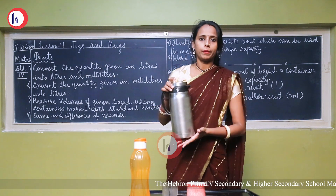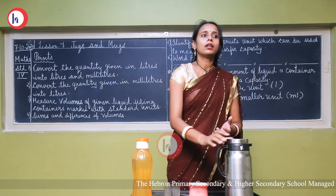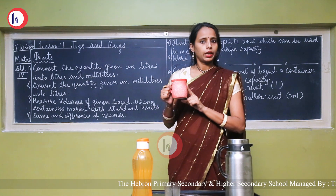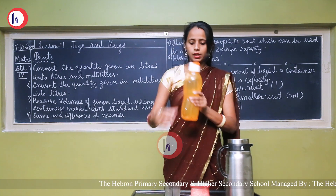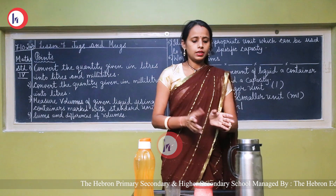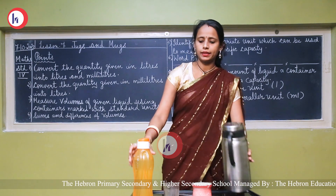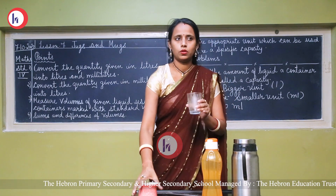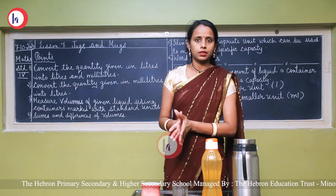This jug is used for more members. If we want to store more liquid, we use the jug, and if we want to drink tea, coffee, or milk, we use the mug. Now see something more here — this is a bottle and this is a glass. If you look at these things, the bottle is the biggest of all, followed by the jug, then the mug, and then the glass. Now we will discuss the capacity of these things.